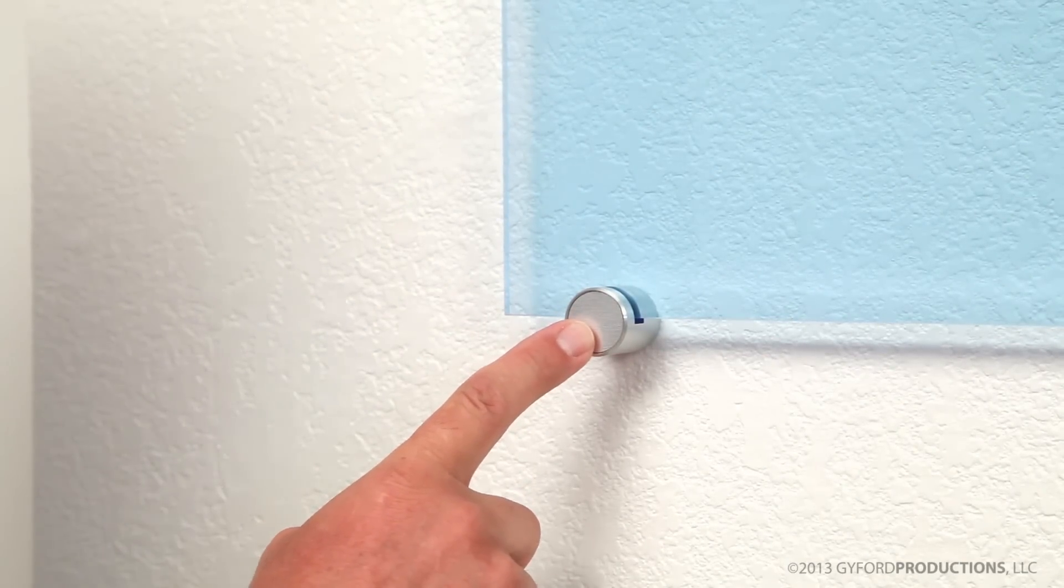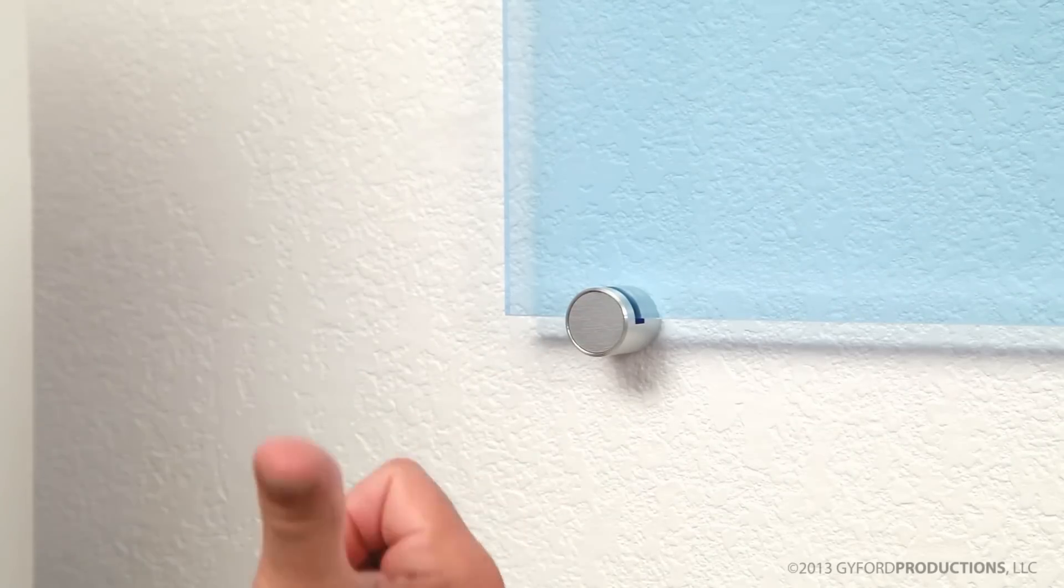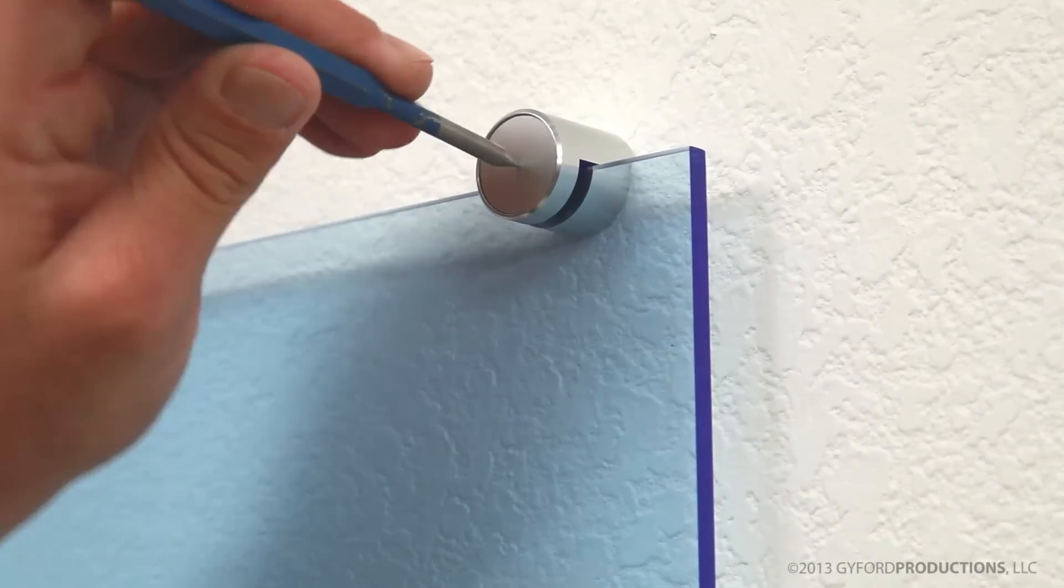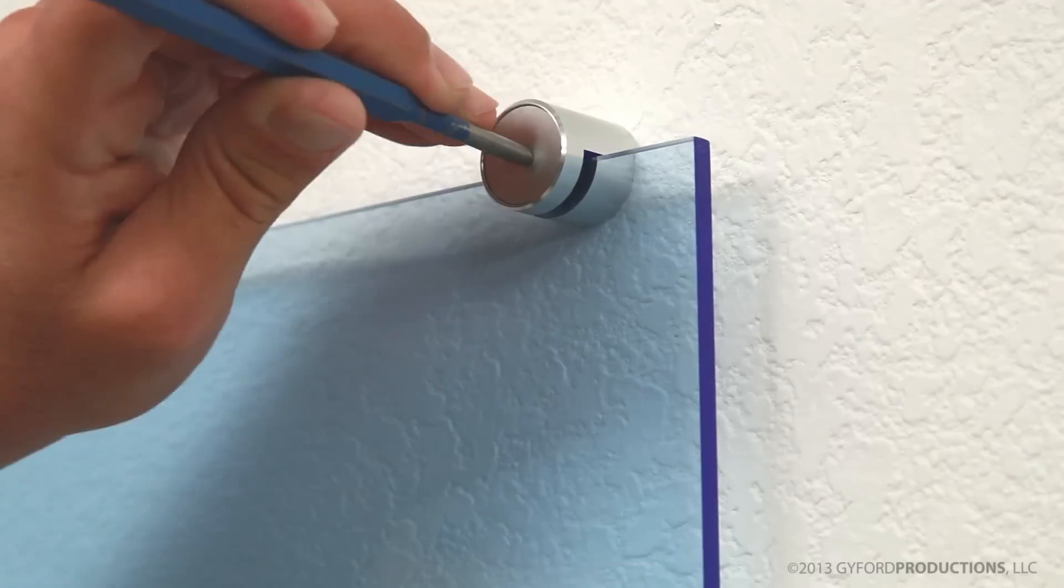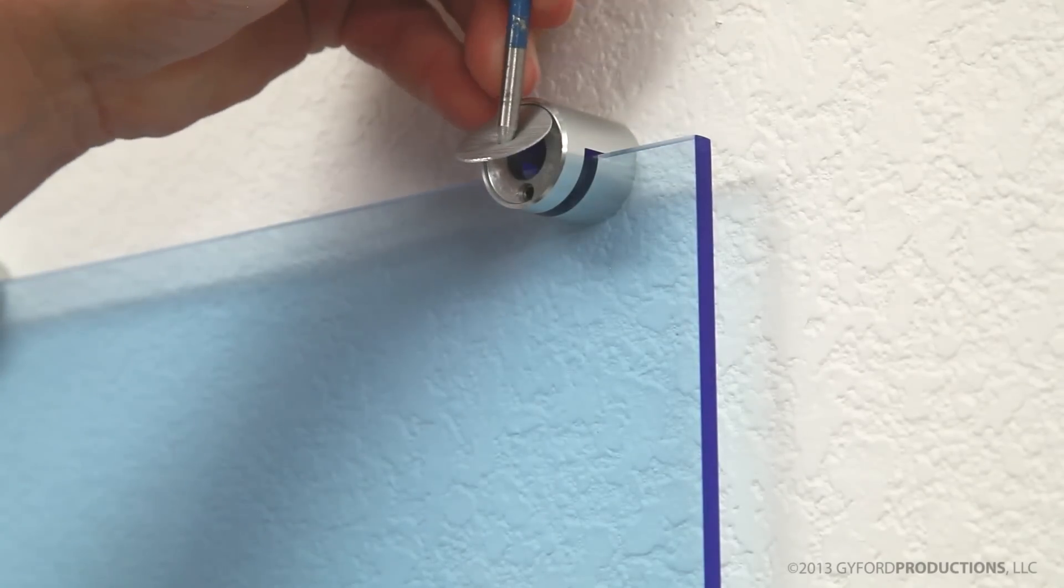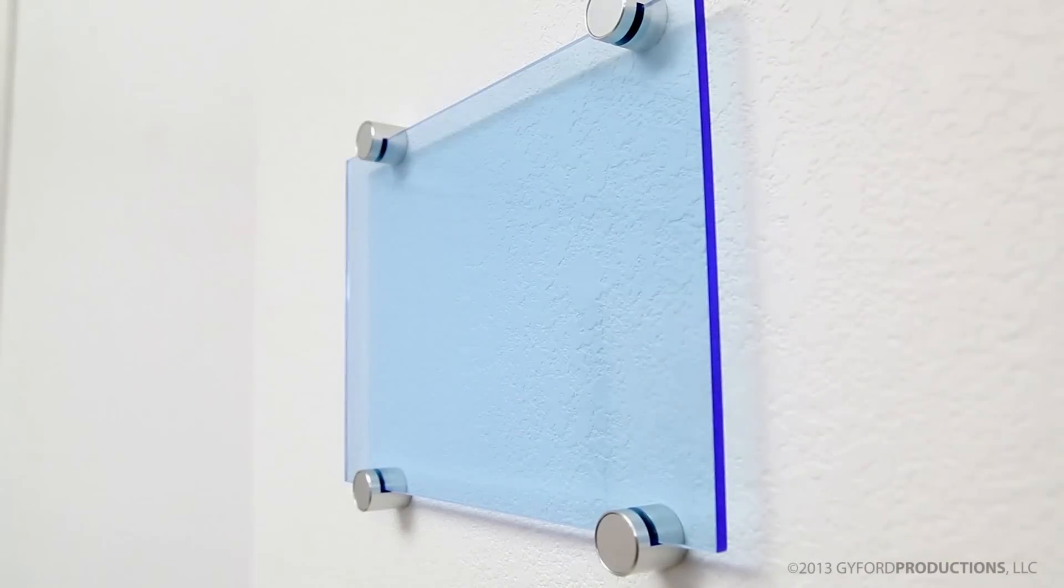This we consider a permanent mount as this disc has to be destroyed to be removed. If you do need to remove the disc the way to do it is with a punch and hammer. Find about center. Give it a good tap or two to get into the material. And you can pry them right off. And there you have it.